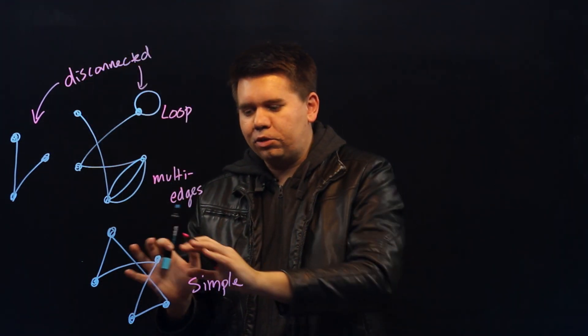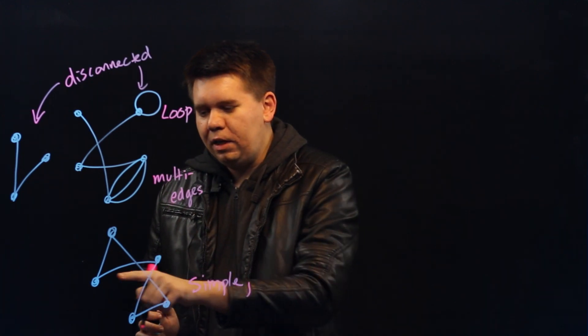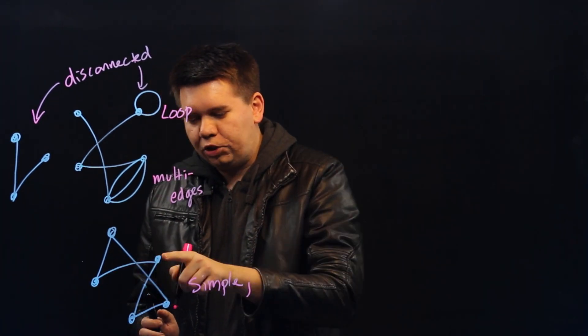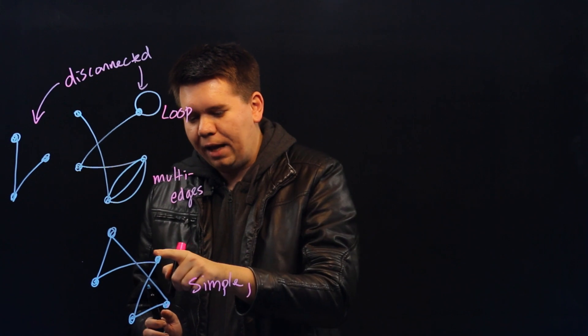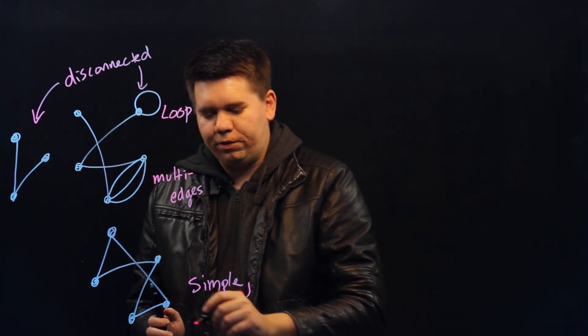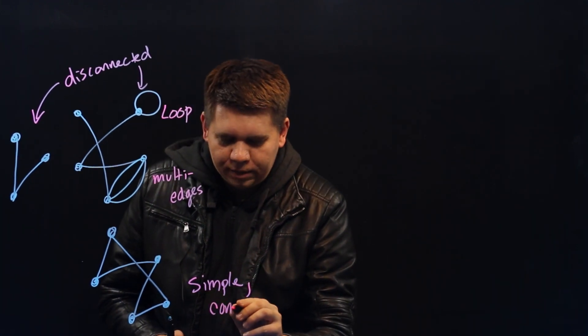By way of contrast, this graph on the bottom, from any vertex, there's some edge that connects it via a path, via a series of edges, to any other vertex. So we call it a connected graph.